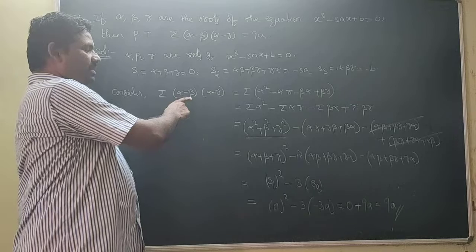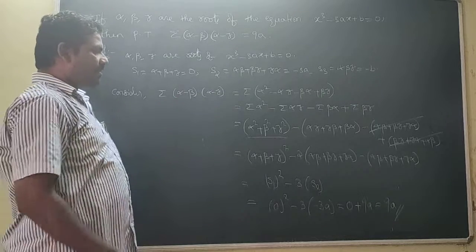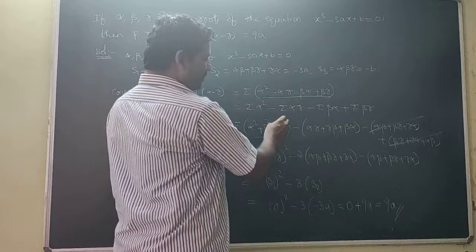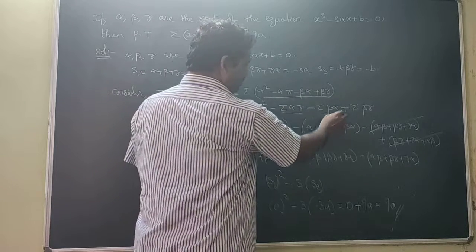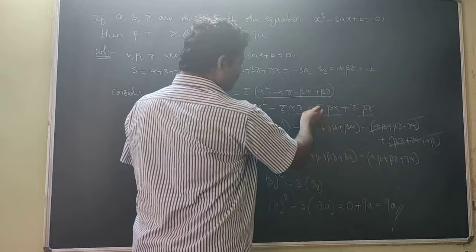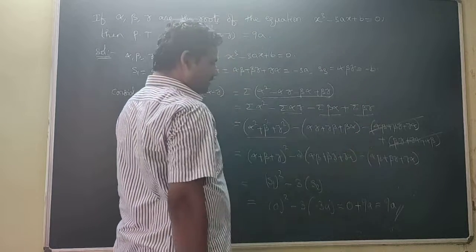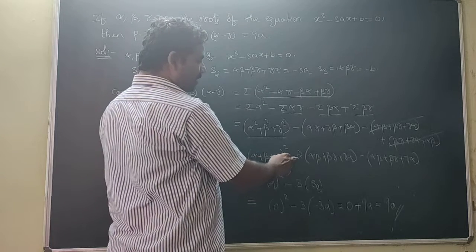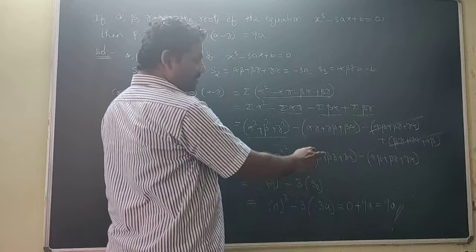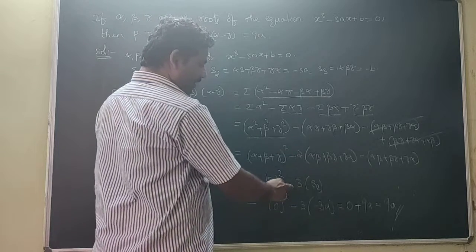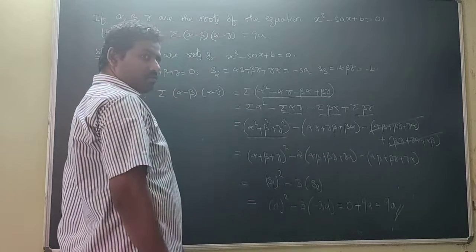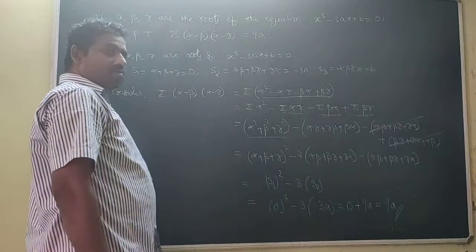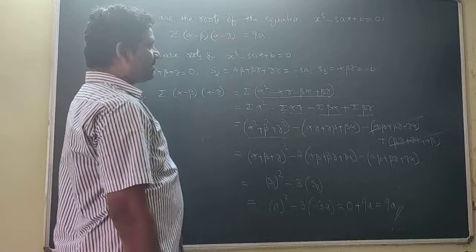So the summation of (alpha - beta)(alpha - gamma): first we expand this and apply the summation individually. The summation alpha·gamma terms all cancel out — both are the same and get cancelled. Then alpha² + beta² + gamma² equals S1² - 2S2, minus 3·S2. So 0² - 3 × (-3) = 9. That is the answer.